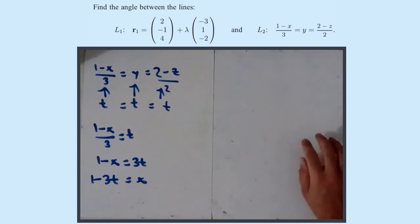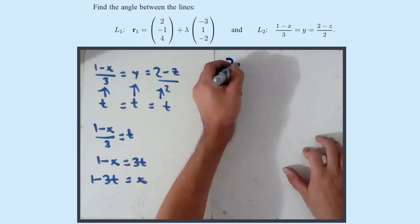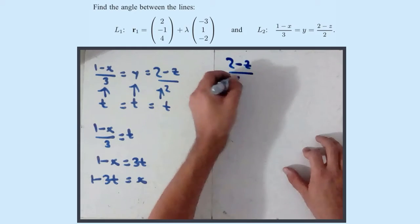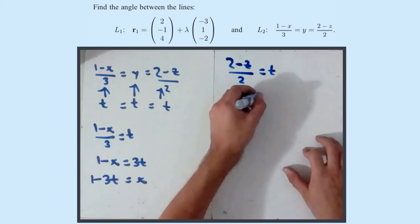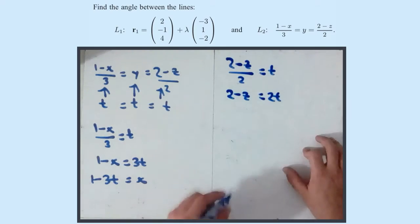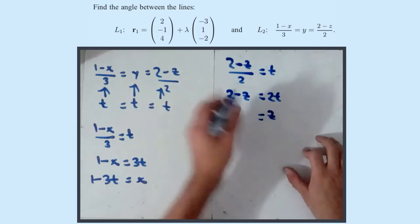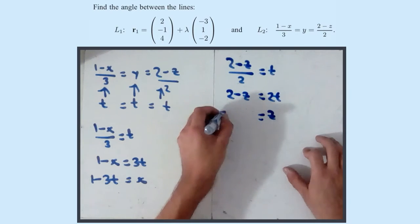If we have a look at the z's, (2 - z)/2 equals t. So 2 - z equals 2t. Z must equal 2 - 2t.